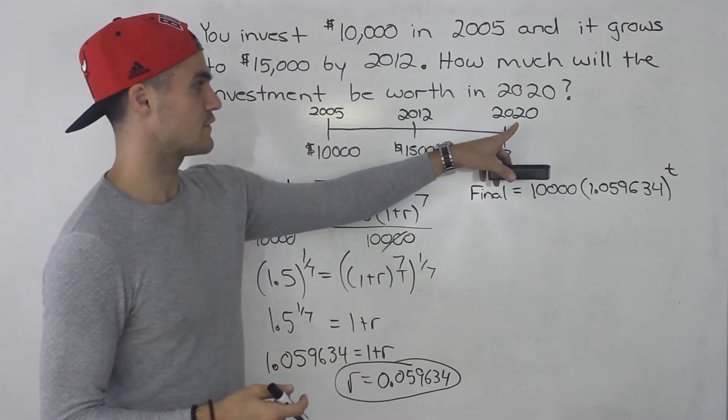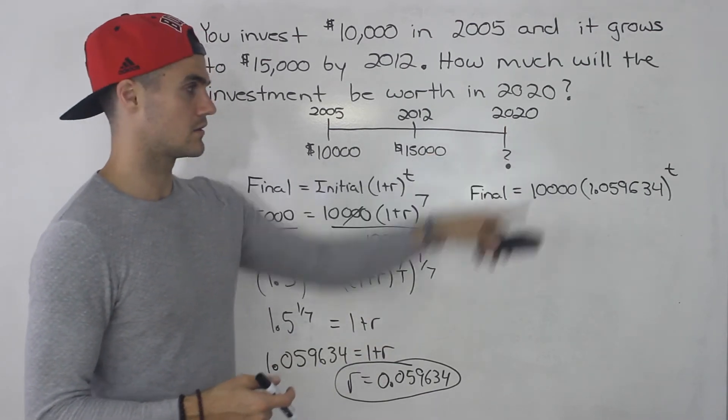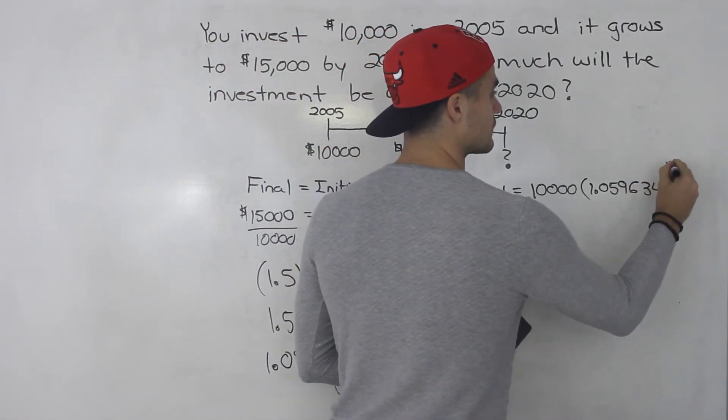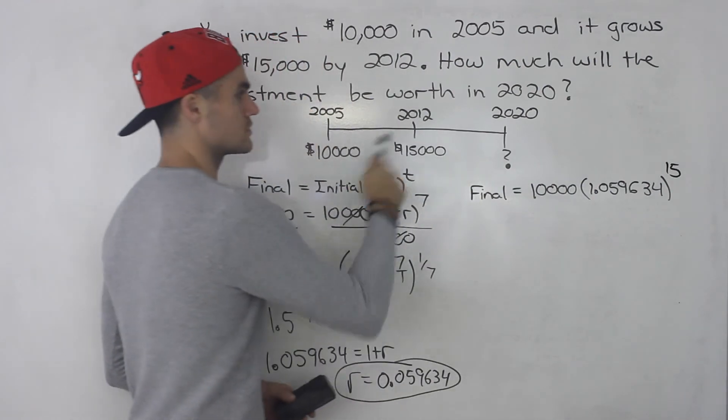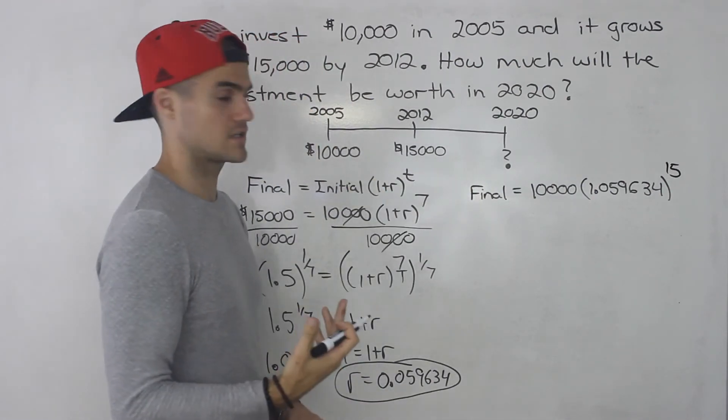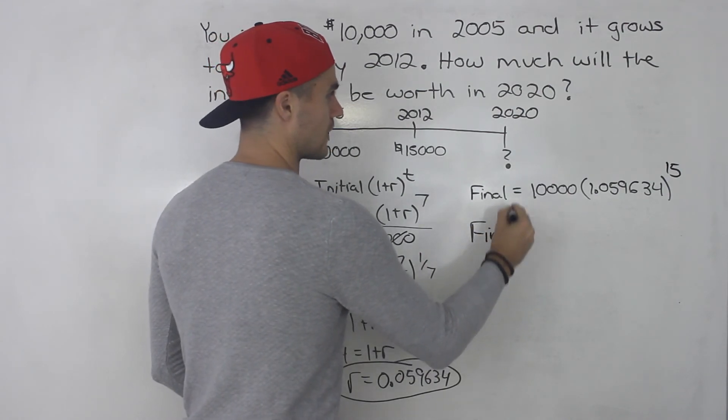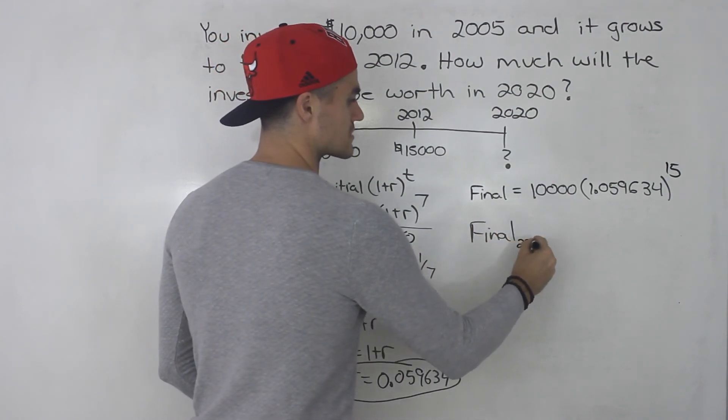Well if we want to find the final amount in 2020, as I mentioned before, we would just plug in a t value of 15. From 2005 to 2020 that is 15 years. When you do that in the calculator that will give you the final amount in 2020.